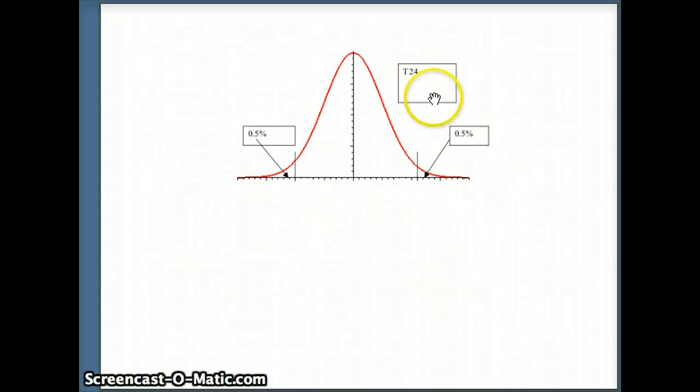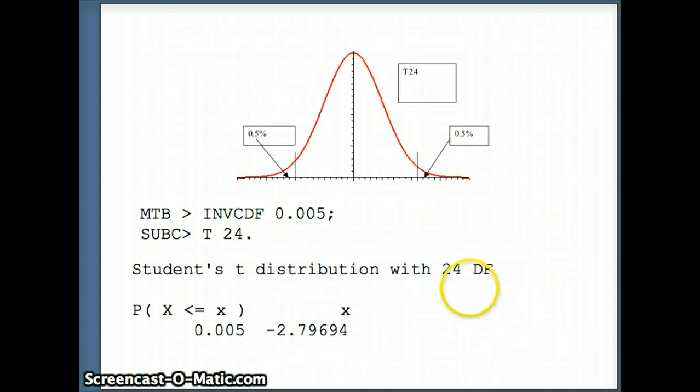So there we go. We're going to label this a t24. We want a half of a percent, so 0.005 in the right tail, 0.005 in the left tail. We're going to ask Minitab, INVCDF 0.005. And then it's going to be a t24, since that corresponds to 24 degrees of freedom. So our t alpha by 2 is going to be negative 2.79694. So at this point, we would have negative 2.79694. And at this point, we would have positive 2.79694. So indeed, t alpha by 2 is 2.79694.